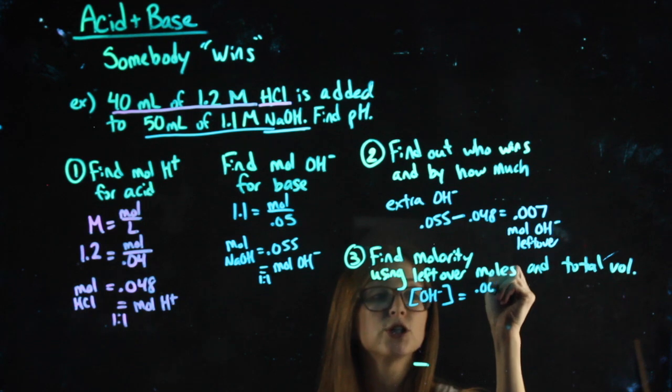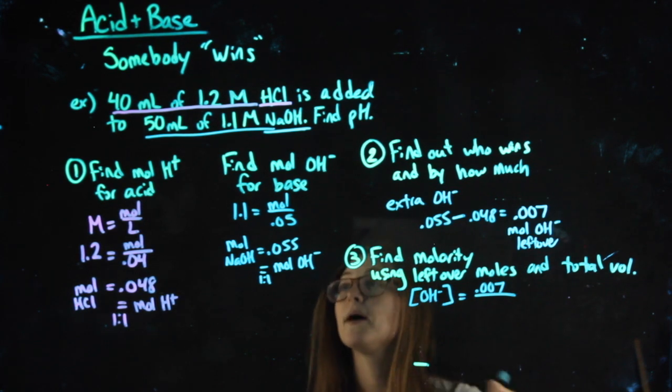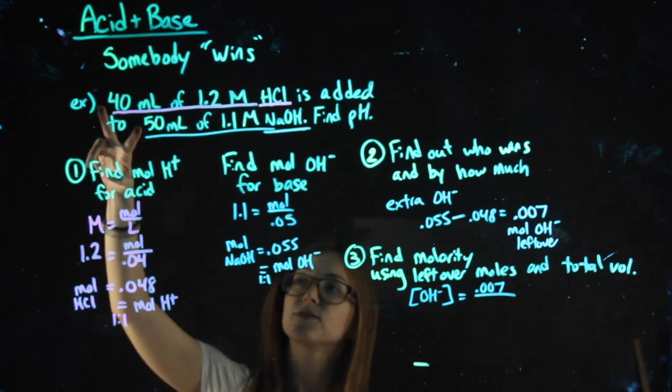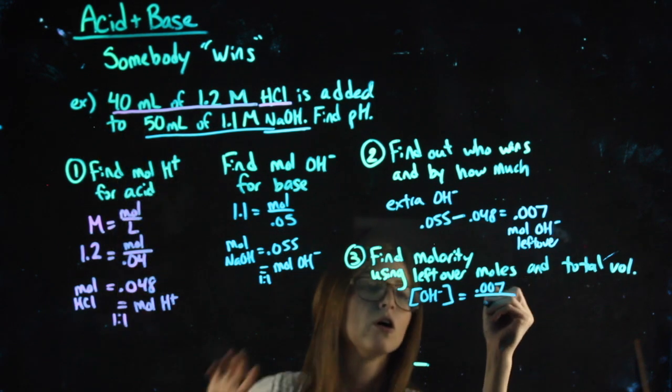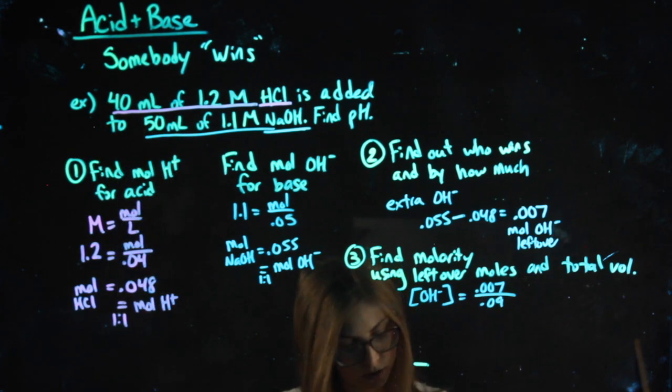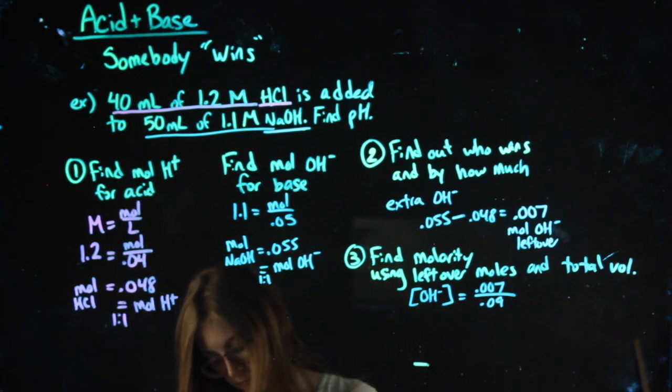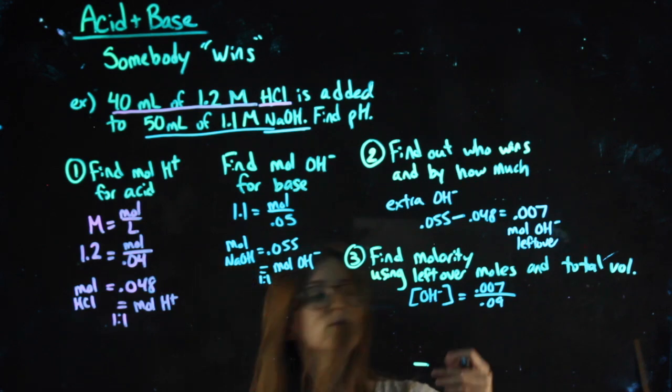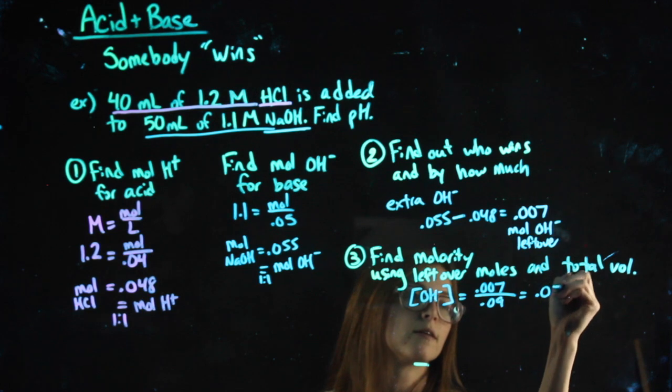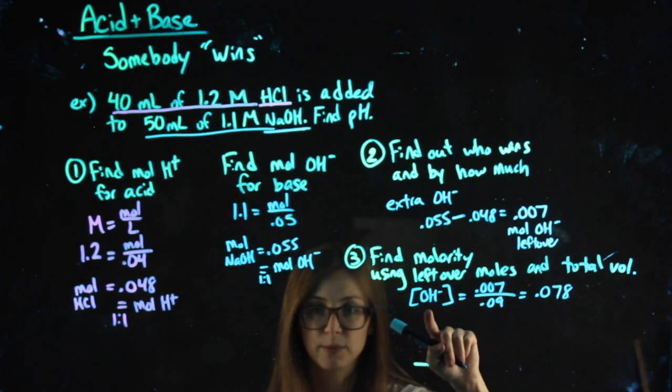Molarity: moles of OH leftover over my total volume. 40 plus 50 is 90 milliliters or 0.09 liters. So I get 0.078. That's my OH molarity.